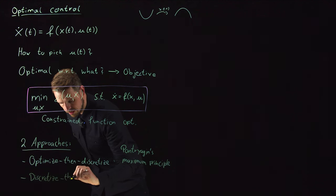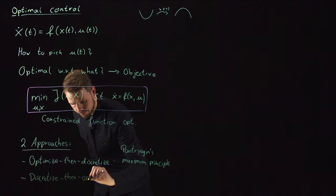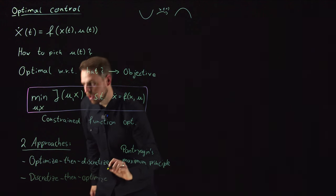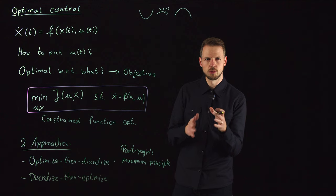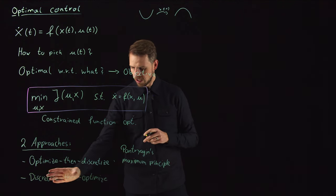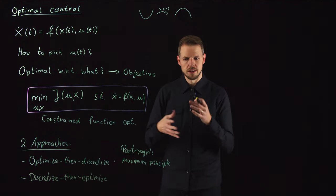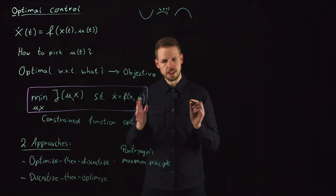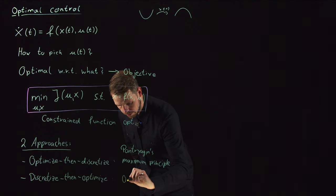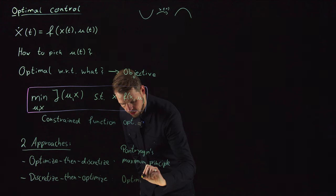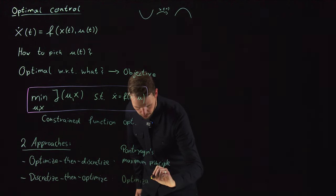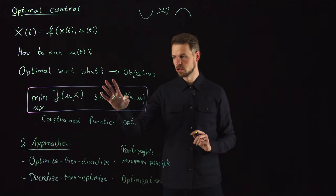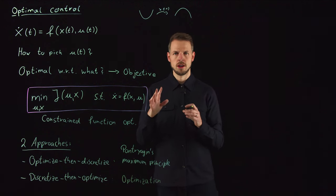And this is the approach we're going to pursue here. It has the advantage that in data-driven approaches, we train models from time series data, so we tend to have discrete time systems anyway. Discretize then optimize really helps us in the data-driven regime. We transform the control problem into a high-dimensional optimization problem—after discretization, these are discrete variables now instead of a control problem on functions.